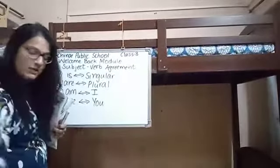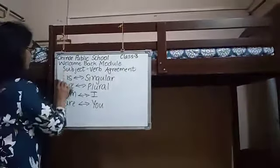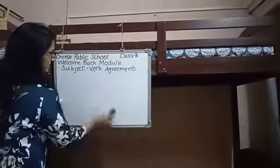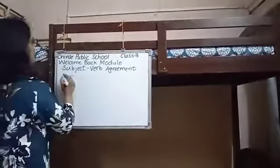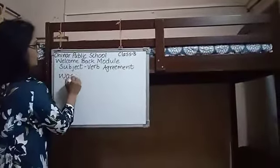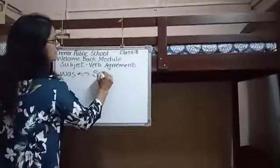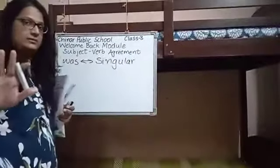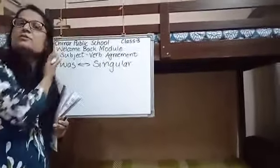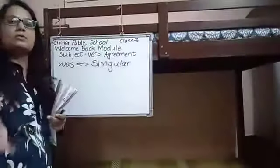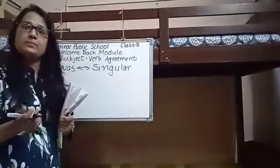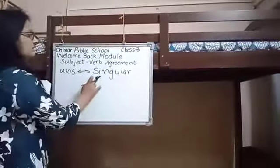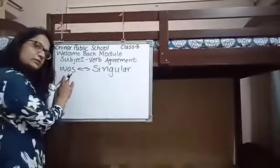Now comes the usage of 'was' and 'were'. 'Was' is used with singular nouns or pronouns. For example, 'He was in Delhi yesterday.' 'I was in the market.' So, with singular nouns or pronouns, we use 'was'.